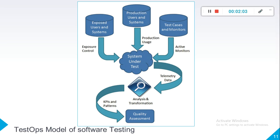We use three approaches to collect data. The first approach is exposing user and system. In this approach, we deploy the latest build only for a subset of users. We pull and collect data from that subset of users, analyze this data, and make decisions based on it.